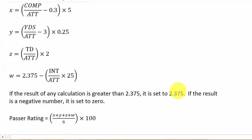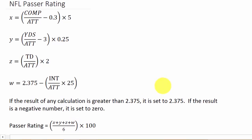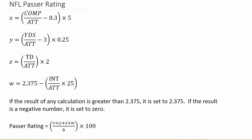Once you calculate X, Y, Z, and W, your passer rating is just X plus Y plus Z plus W, all divided by 6, and then multiplied by 100. That will give you the passer rating.